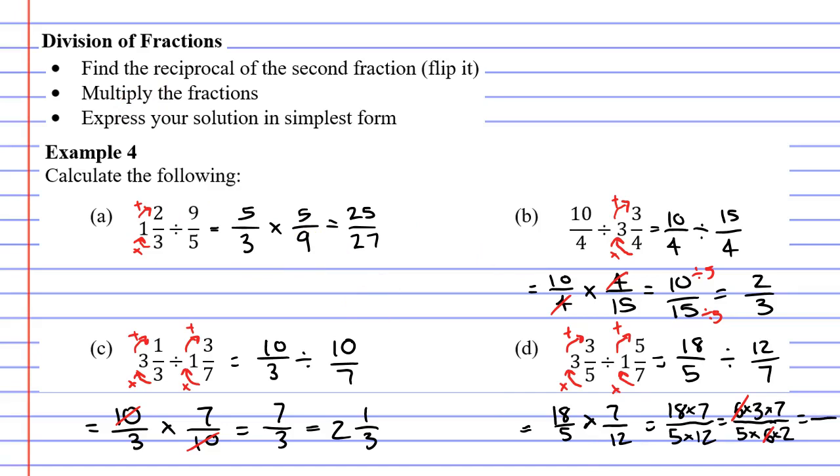The top of the fraction is 3 times 7 or 21 and the bottom of the fraction is 5 times 2 which is 10. And I would like to convert this to a mixed numeral. I've sort of run out of space. So I'm going to write it up above. 21 over 10.